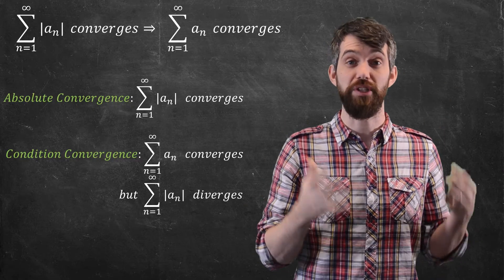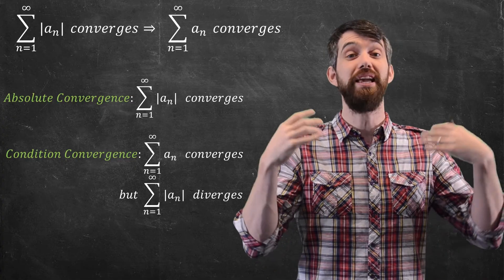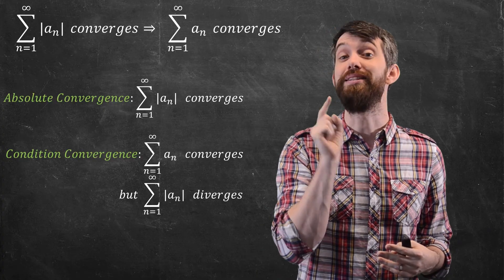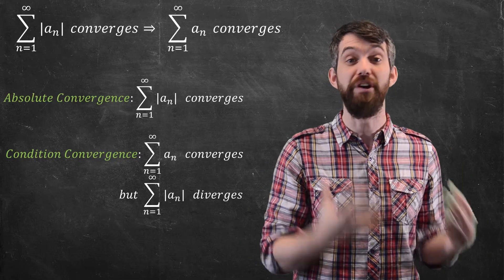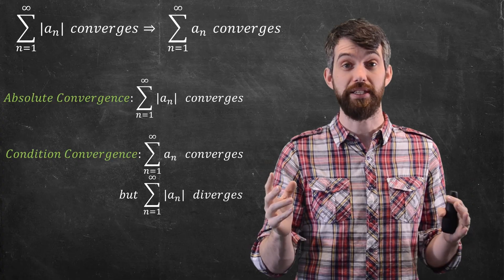Indeed, this example that we started the video with, this minus 1 to the n minus 1 over root n, that was a conditionally convergent series. It converged, but it didn't converge absolutely. So these are just a couple little pieces of terminology that are going to be very important for our next test, the ratio test and the root test.